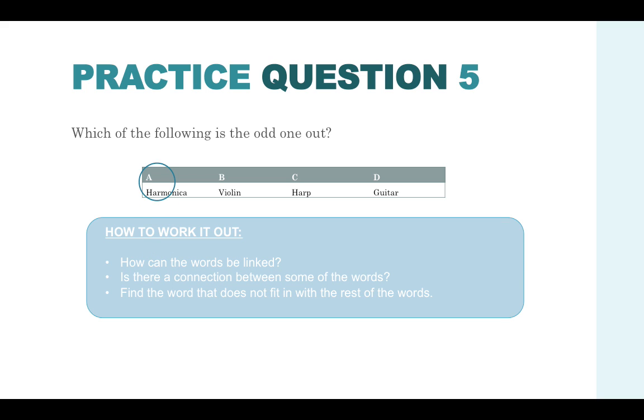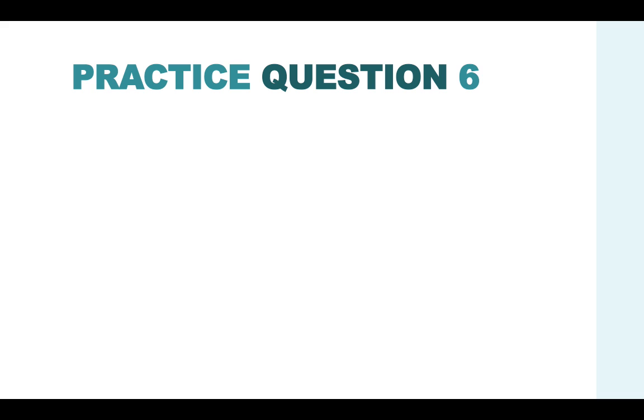In actual fact A is the odd one out. We know this because answer option B, C and D are played by using your hands with strings. Whereas a harmonica is used just simply by playing with your mouth. So this is in fact the odd one out.